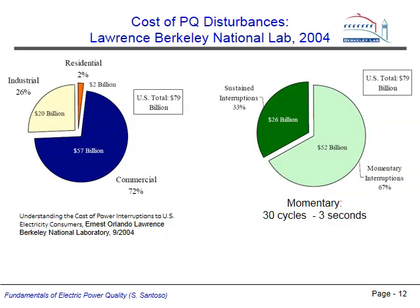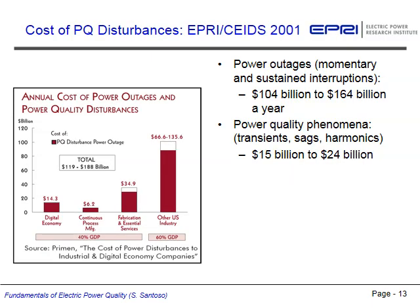Utilities have a large financial incentive to take steps to mitigate power quality issues. In 2004, Lawrence Berkeley National Lab estimated that power interruptions cost American businesses and customers $79 billion per year in lost productivity, data, and resources. Two-thirds of these losses were caused by interruptions lasting less than three seconds. In 2001, EPRI and CEIDS estimated that power quality problems caused the loss of $119 to $188 billion per year. Of these losses, $104 to $164 billion were the result of service interruptions, while $15 to $24 billion were the result of other power quality disturbances such as harmonics, voltage sags, and transient phenomena.